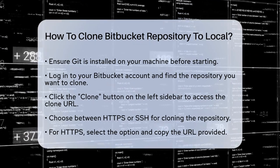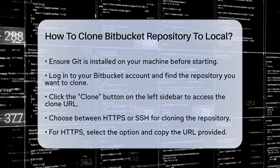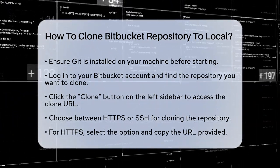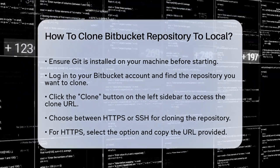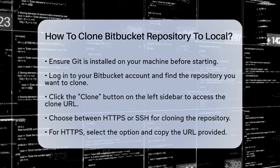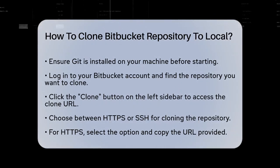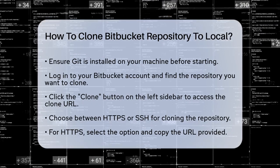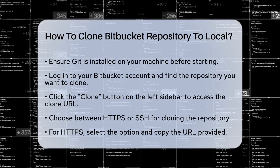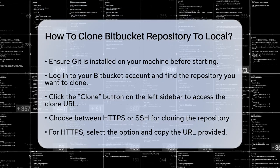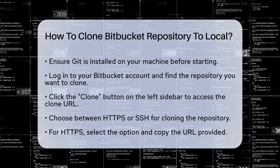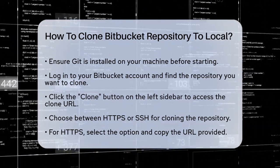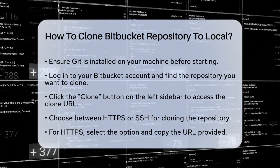Next, log in to your Bitbucket account and navigate to the repository you want to clone. Once you're in the repository, look for the Clone button, usually found on the left sidebar. Click on this button to get the clone URL. You have two main options to clone the repository: using HTTPS or SSH.